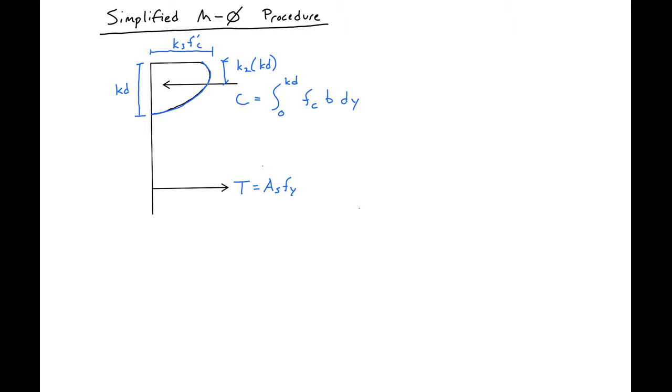We can find the depth of our neutral axis by considering equilibrium. We'll set our tension equal to compression. Our tension is Asfy and our compression is the integral from 0 to Kd of Fc B dy.